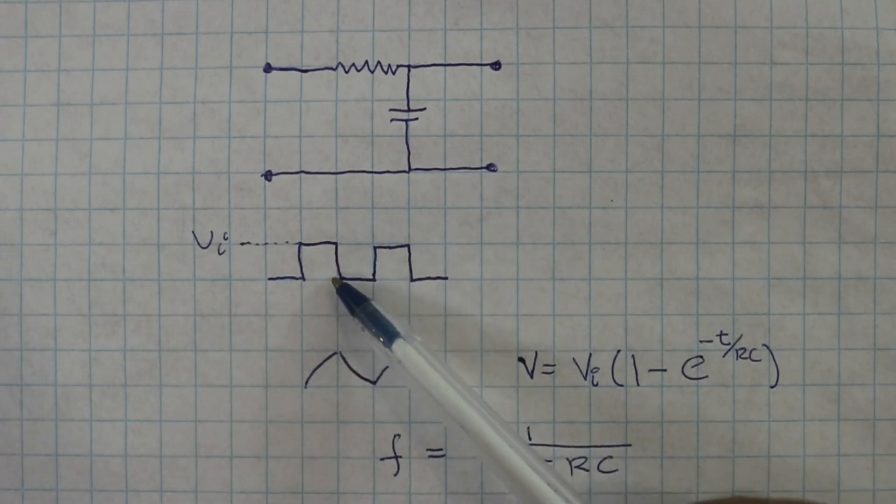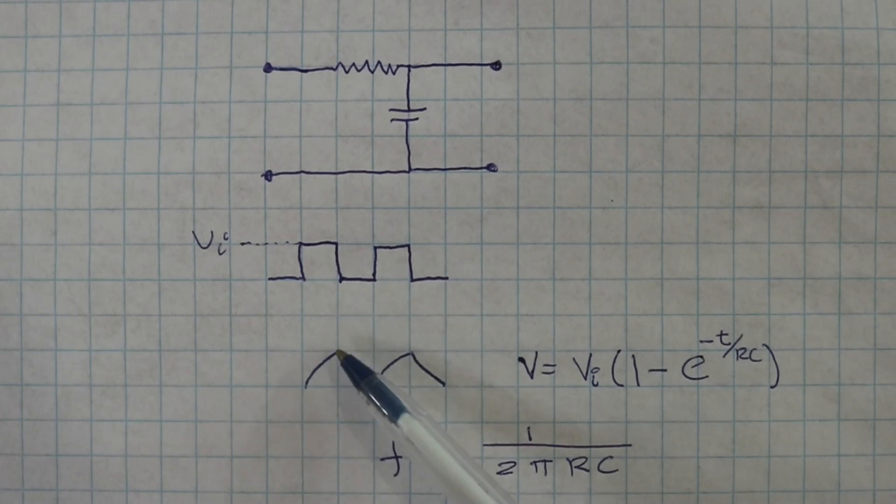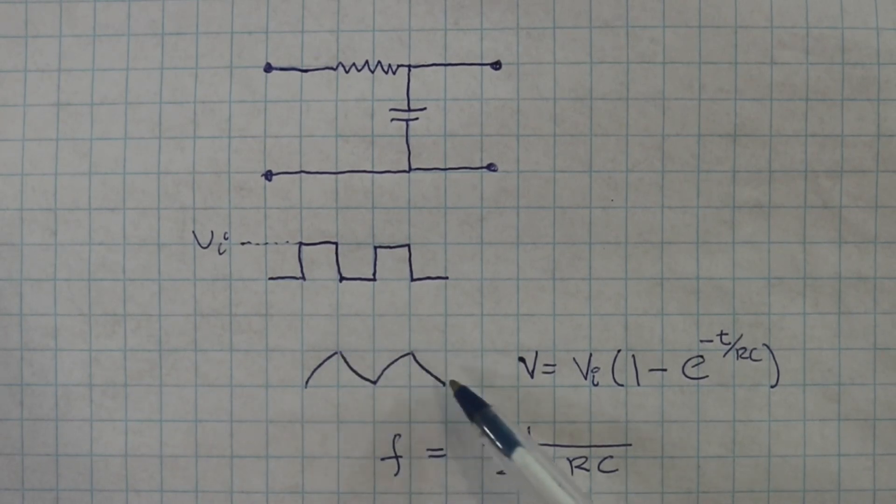Then the voltage at the input goes to zero and the capacitor starts to discharge and then the cycle repeats.